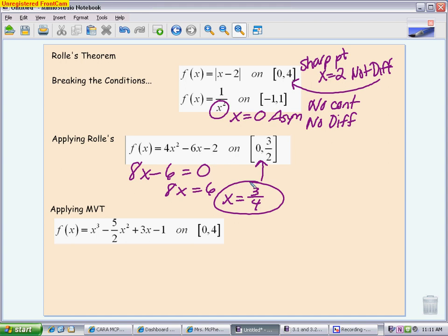And then finally, the last one, applying the mean value theorem. Again, if it says to apply the mean value theorem, you can work under the assumption that the conditions hold. The conditions for the mean value theorem are just continuity and differentiability, nothing about the endpoints being the same height like Rolle's. First thing I want to do with mean value theorem is I want to take the derivative. So my derivative is going to be 3x squared minus 5x plus 3. That's the f prime of c side. If you think of your mean value theorem, one side says f prime of c. That means the derivative.